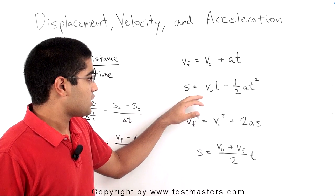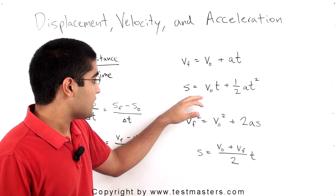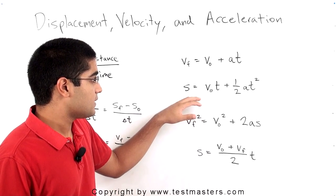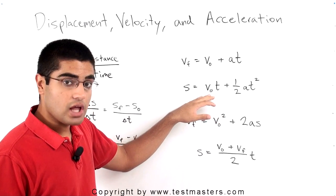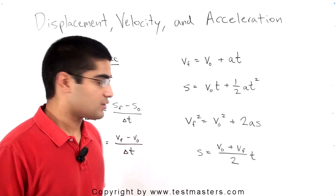Now, this expression gives you a way to calculate displacement. It's equal to velocity, initial velocity times time plus one-half at squared.